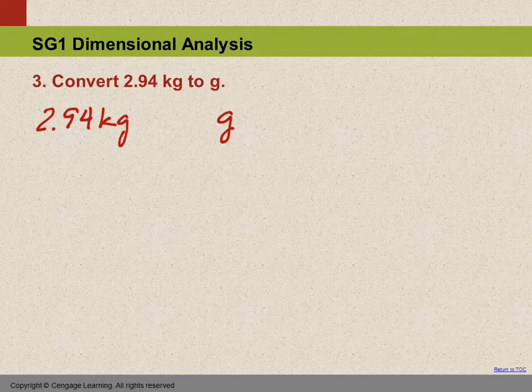Here, the first one, the kilogram, has a prefix. The second one does not have a prefix. There's one prefix, so this is a one-step problem. If there's two prefixes, then it's a two-step problem.